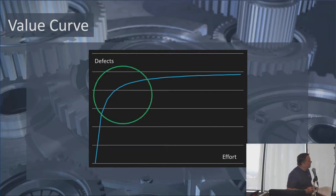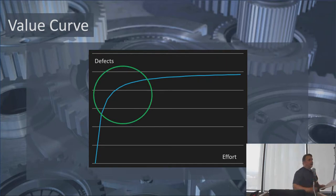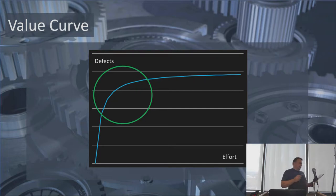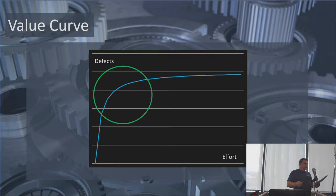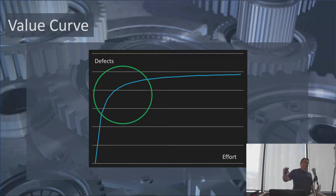The best place to be is in the sweet spot where you get the most bang for the buck. If you want to be efficient and minimize the investment required to find defects, this is key: doing at least a mediocre job on lots of activities is better than doing a great job at few activities.